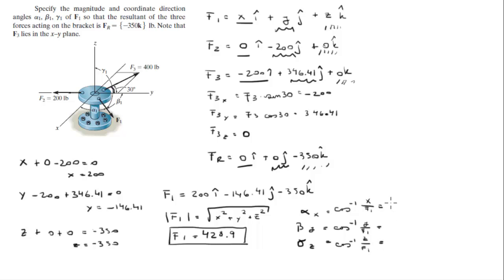When you calculate these angles you're going to get that alpha is 62.2 degrees, beta is 109.96 degrees, and gamma is 144.7 degrees.